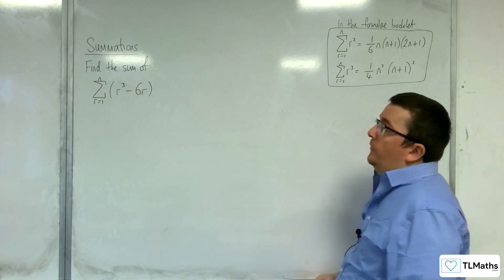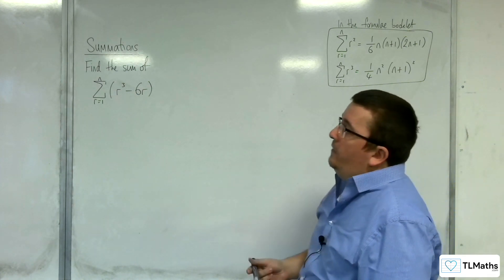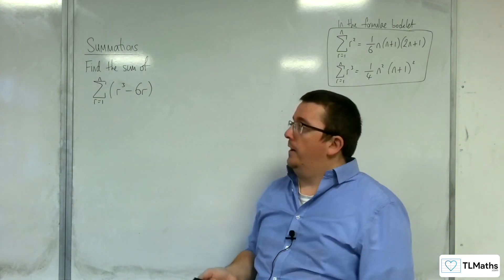In this video, we're going to look at finding the sum from r equals 1 to n of r cubed, take away 6r.